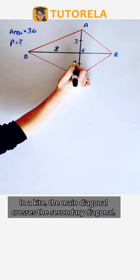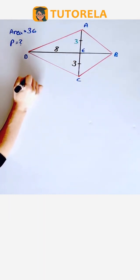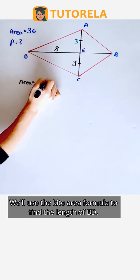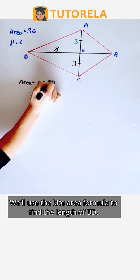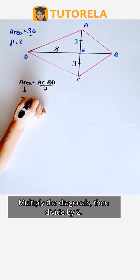In a kite, the main diagonal crosses the secondary diagonal. We'll use the kite area formula to find the length of BD. Multiply the diagonals, then divide by two.